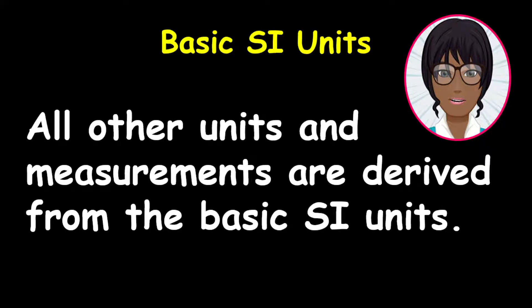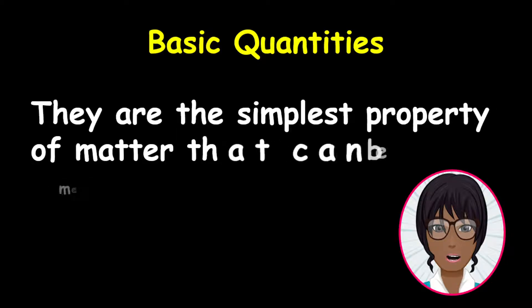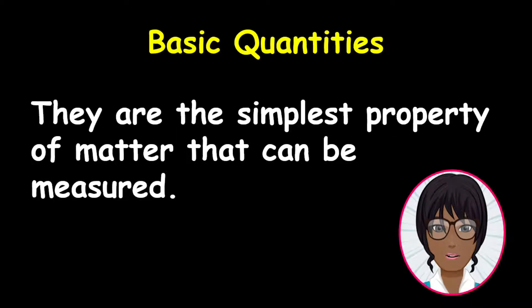We are moving on to basic quantities. I want you to really think about this statement: Basic quantities are the simplest property of matter that can be measured. For example, a simple measurable property of matter is its mass or length.